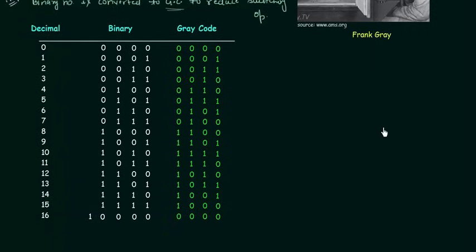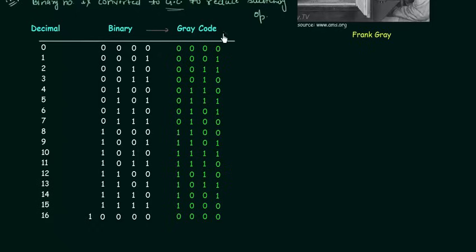The first thing to do is convert the decimal number to binary, and then we will convert those binary numbers to gray code. In this lecture I am not going to explain how to convert binary to gray code — I will explain that in the next lecture. I have already completed the gray code column, and now we will see why switching operation is reduced. Let's analyze 3 and 4.